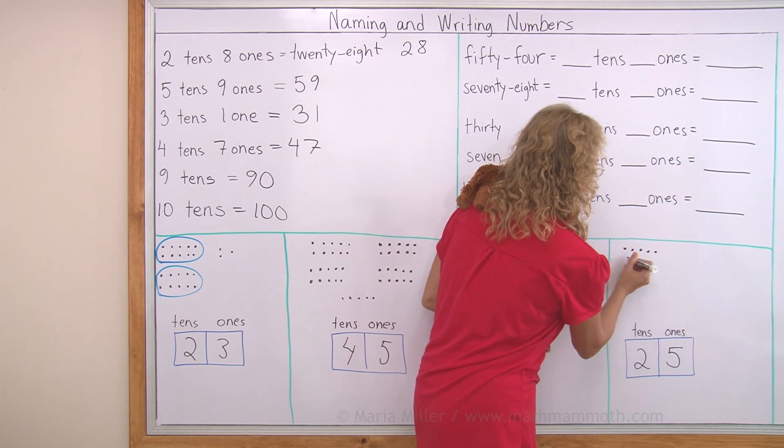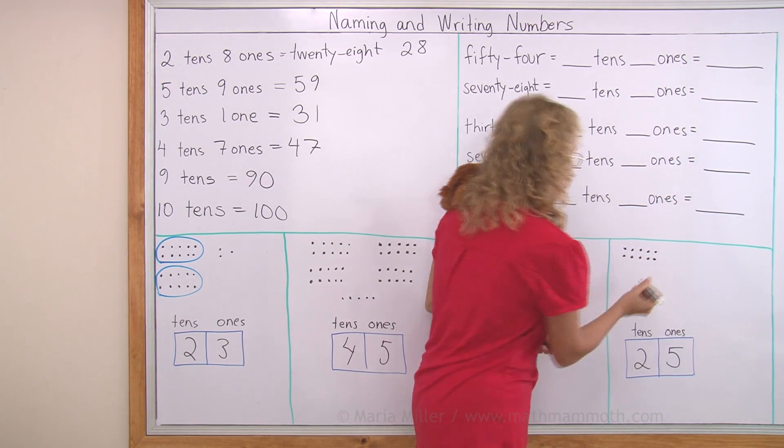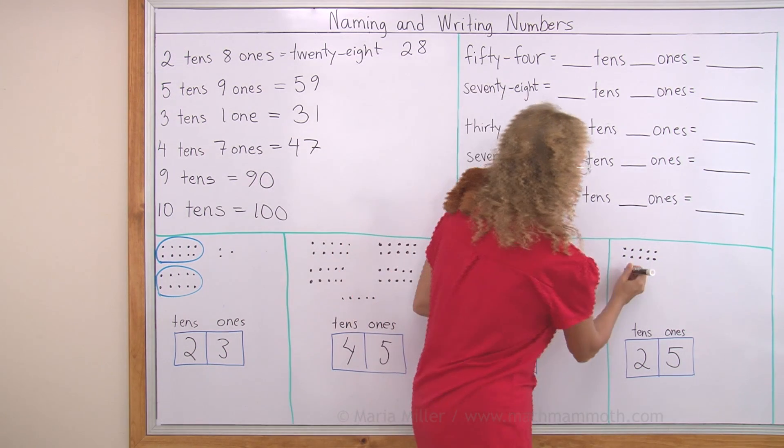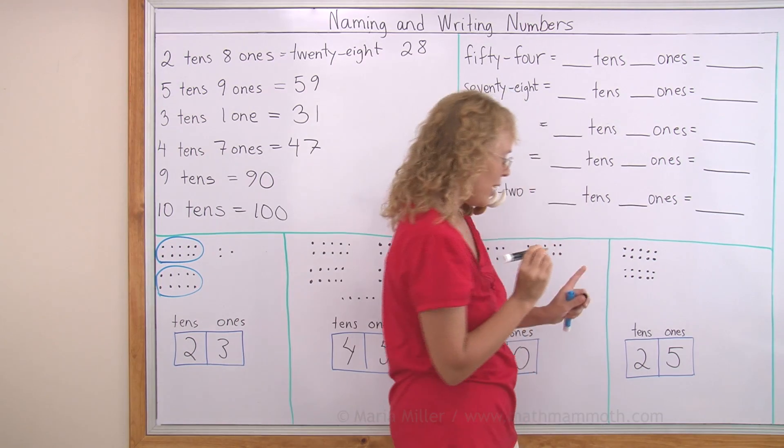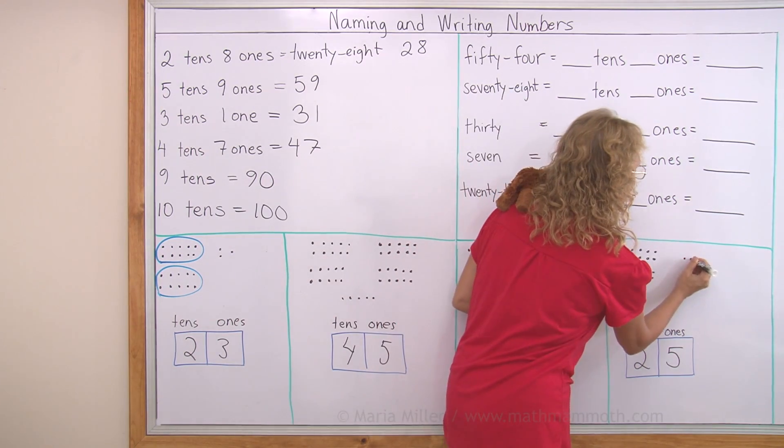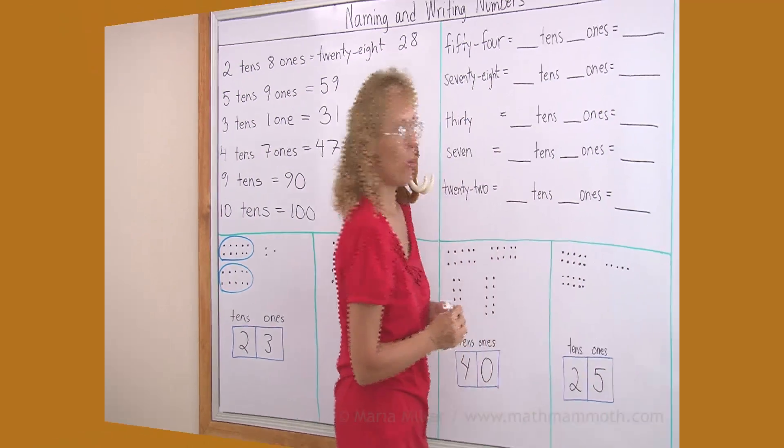Oh, blueberries, yeah. How many dots will I draw? Okay, this is 10. Then, another 10. That's 2 tens. And then, 5 little dots, no blueberries.